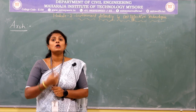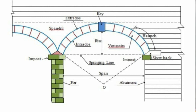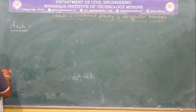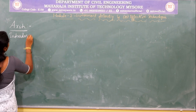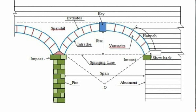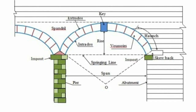To learn about the elements of an arch, there are various elements we need to learn in detail. As shown in the figure, the first element is intrados. Intrados is the inner curve of an arch. Similarly, extrados is the external curve of an arch. Intrados is the inner curve and extrados is the outer curve of an arch.